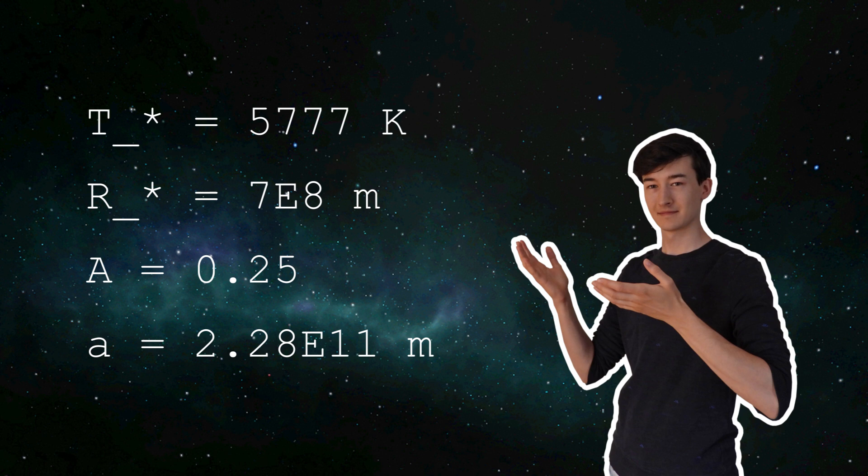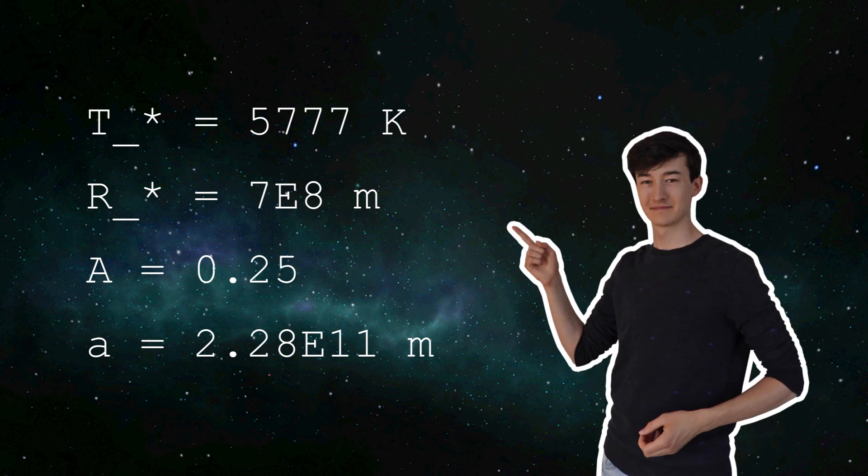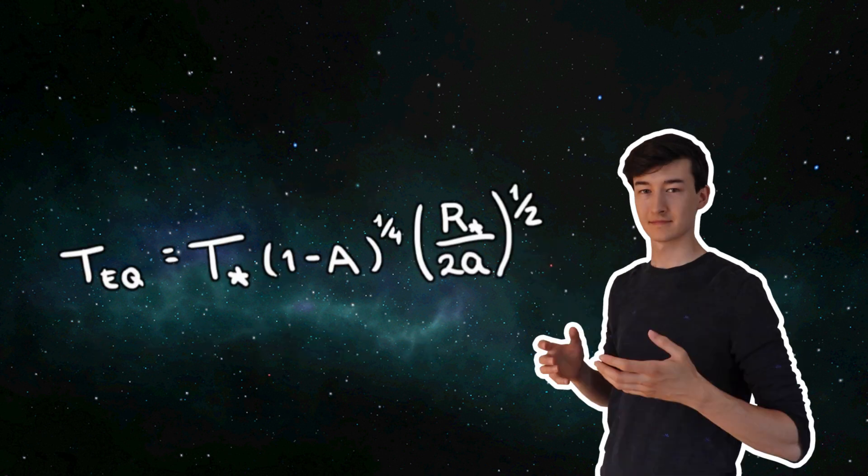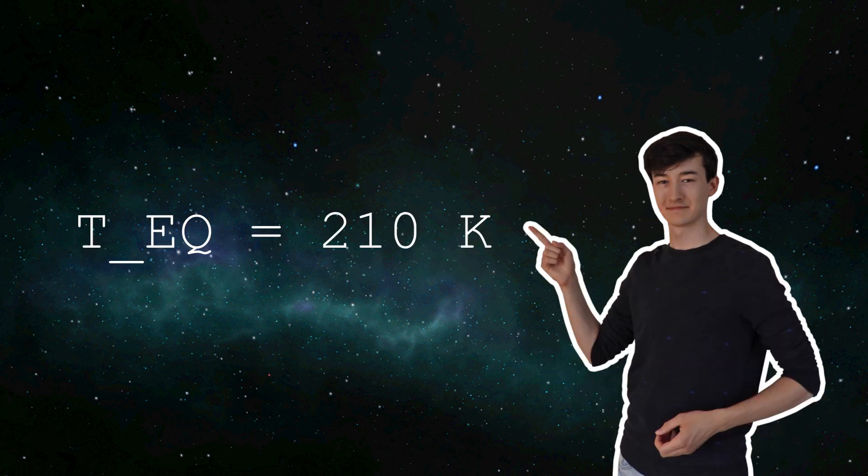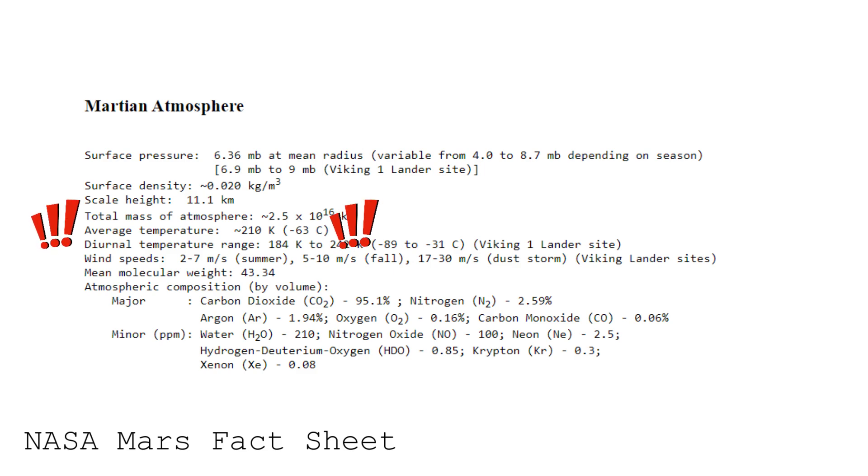Lowercase a is the semi-major axis of the planet's orbit. Okay, to show you how this works, we know all the variables in the case of Mars. So according to this equation, the equilibrium temperature should be about 210 Kelvin. And as it turns out, the average surface temperature of Mars is also about 210 Kelvin.